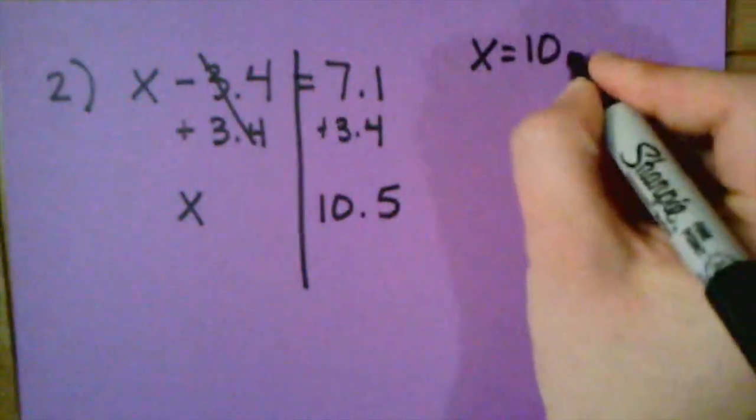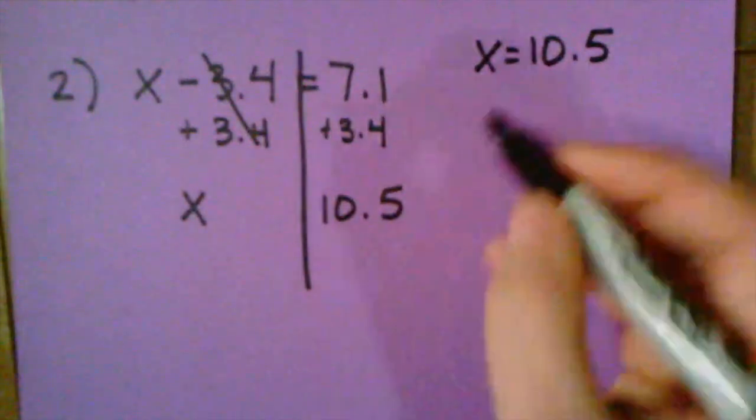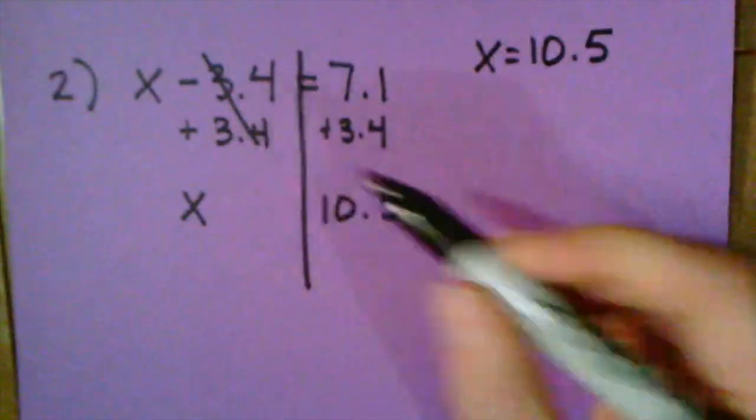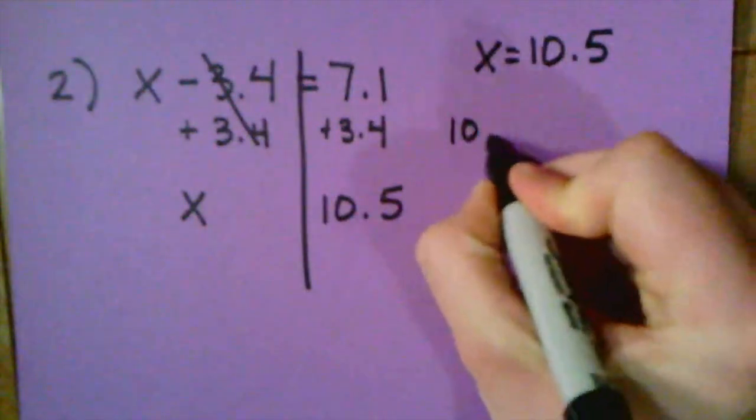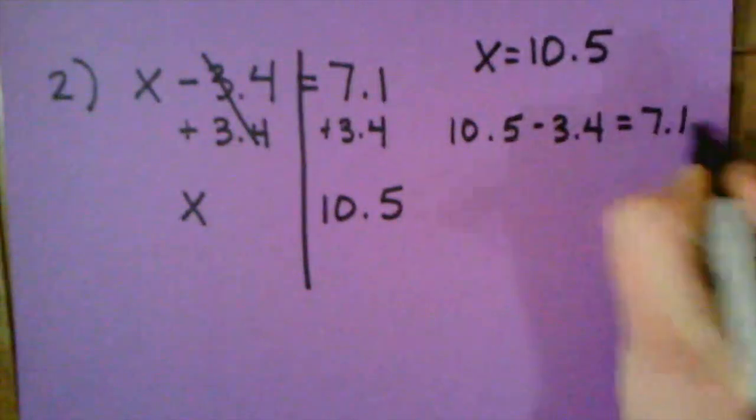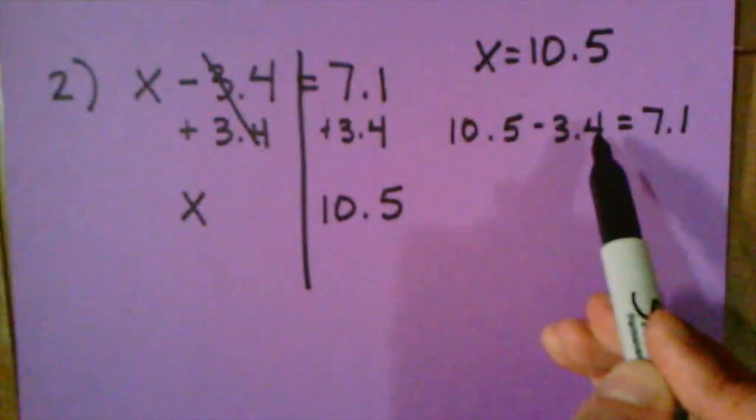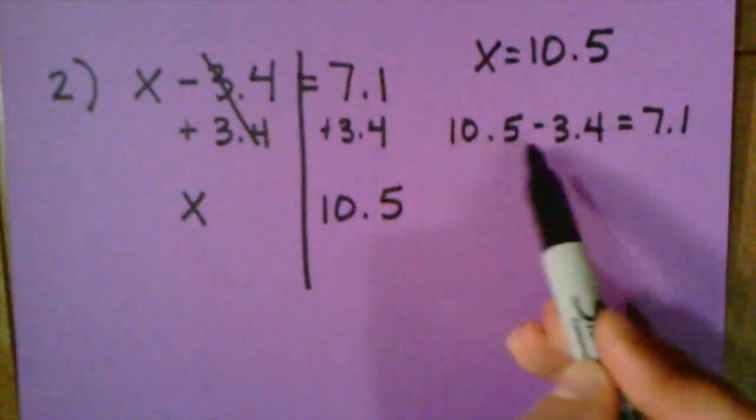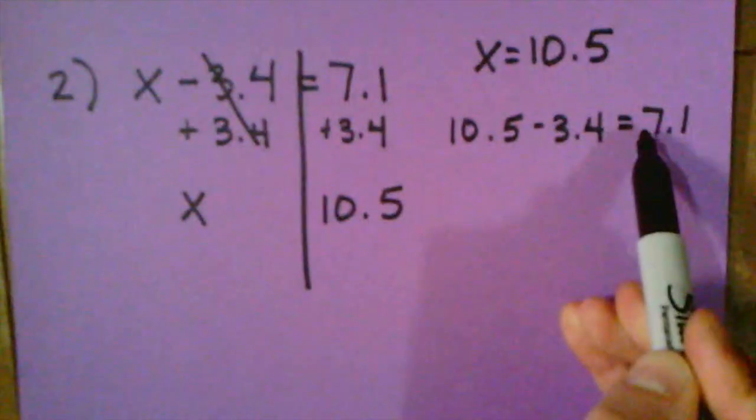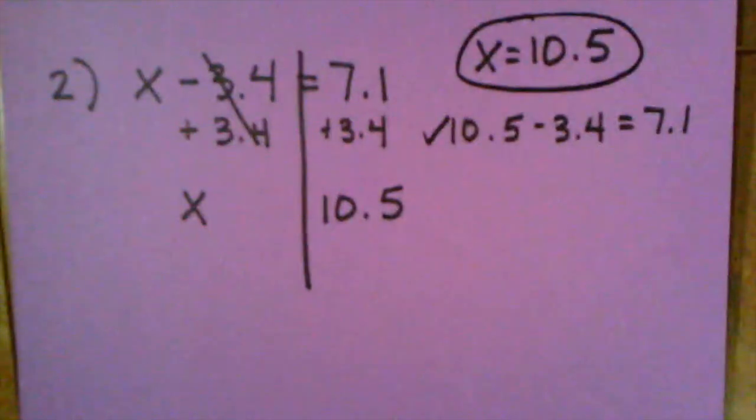So I think that X equals 10.5. Again, I'm not finished until I check it, so I should take this 10.5 and plug it back into my original equation. When I do that, I have 10.5 minus 3.4 equals 7.1. When I run back through this, I see that 5 minus 4 in the tenths would equal the 1, and 10 minus 3 would equal the 7. So I know that this is true. And X is equal to 10.5.